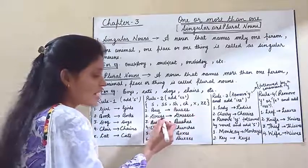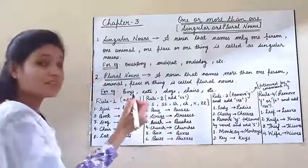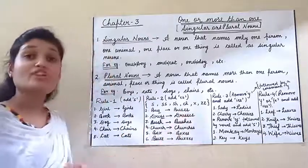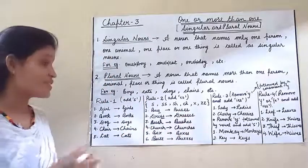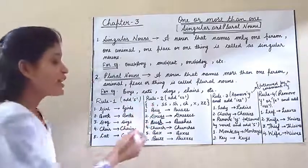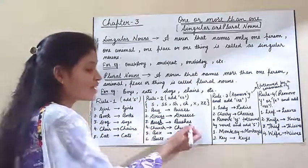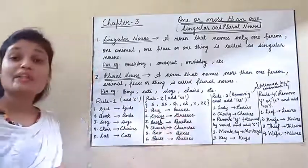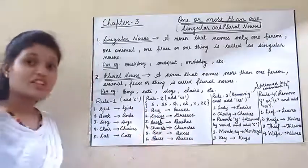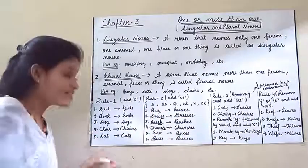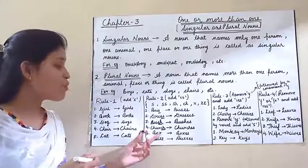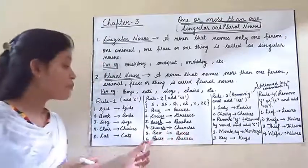'Dress' — the last letters are SS (double S), so we add ES and it becomes 'dresses.' 'Bush' — the last letters are SH, so we add ES and it becomes 'bushes.' 'Church' — we add ES and it becomes 'churches.' 'Box' — 'boxes.' 'Buzz' — 'buzzes.'